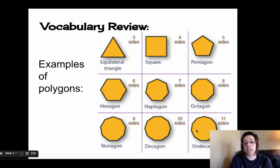And then undercagon that has 11 sides. I would say that that is not the most important one to remember. Just remember that all polygons are made up of line segments and are closed figures on a plane.